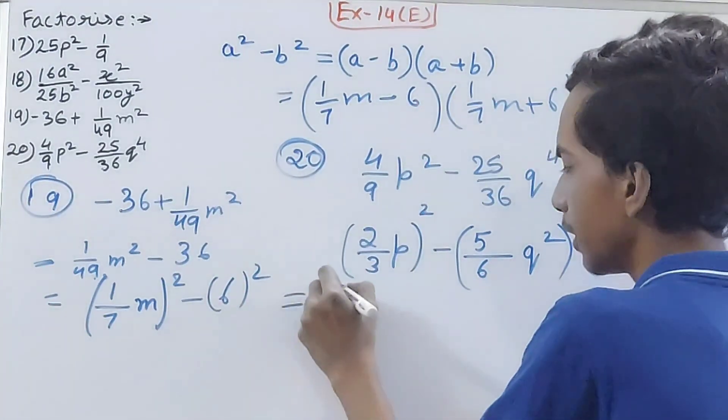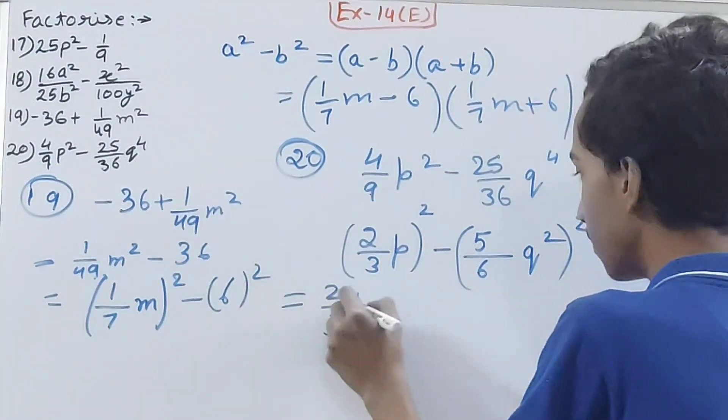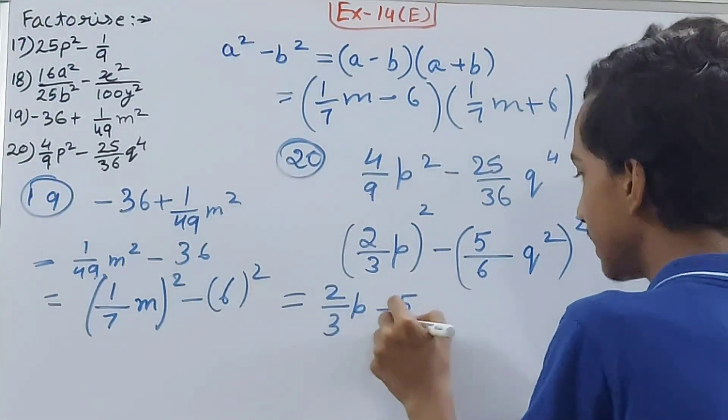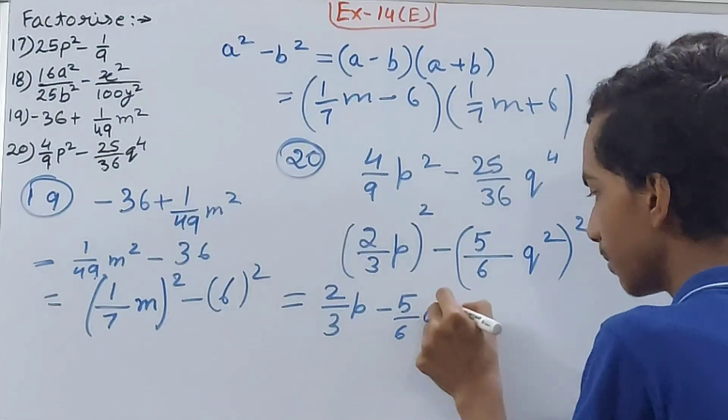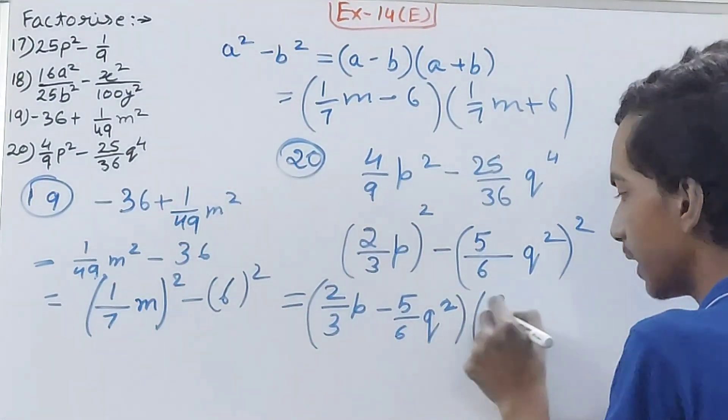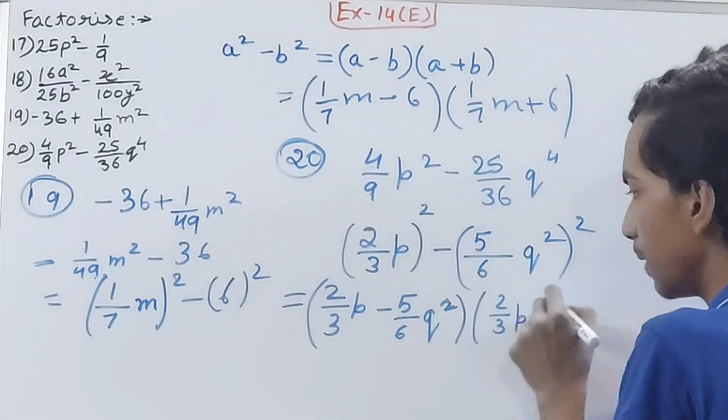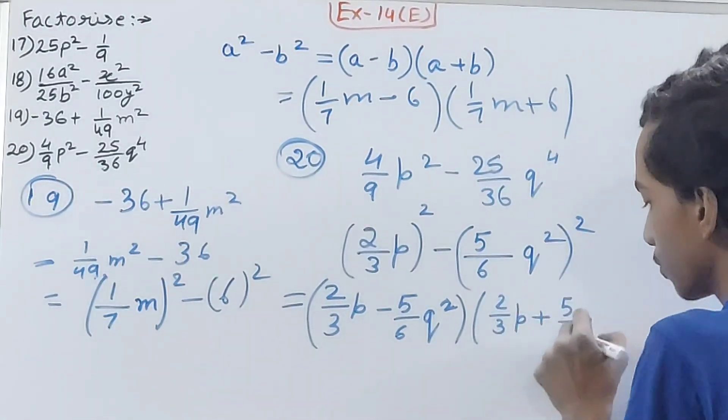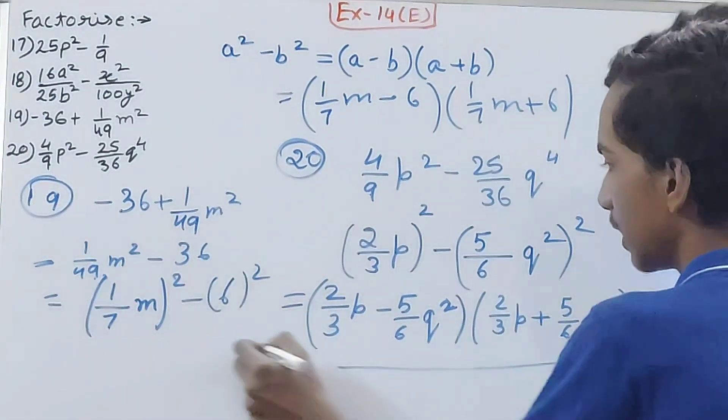Now we will have (2/3p - 5/6q²) in one bracket, and in the other bracket we will have (2/3p + 5/6q²). That is our final answer.